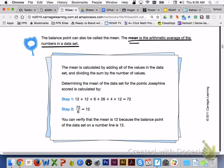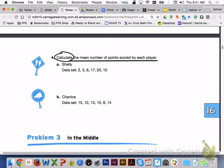Please turn to page 1078. The balance point can also be called the mean. The mean is the arithmetic average of the numbers in a data set. The mean is calculated by adding all of the values in the data set and dividing the sum by the number of values. Determining the mean of the data set for the points Josephine scored is calculated first by adding all of her scores together and then dividing by six. So, the mean for Josephine's scores would be 12.